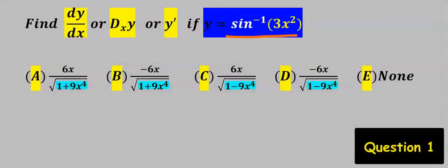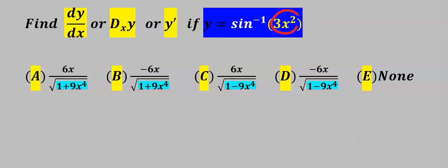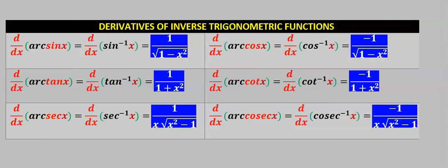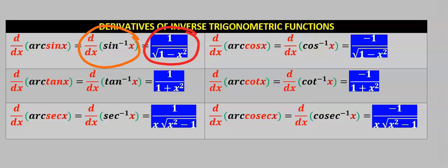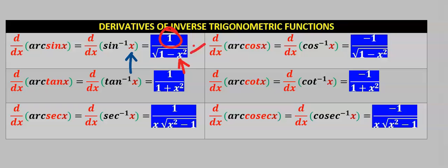Let's find the derivative of this function. The first thing you are going to observe is that 3x squared has taken over the place of x. When you differentiate sine inverse of x, you get 1 divided by the square root of 1 minus x squared. The 1 at the top came from the differentiation of x — when you differentiate x you get 1 — and this x is then returned, squared.